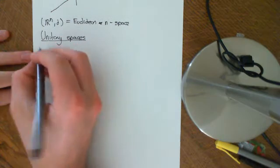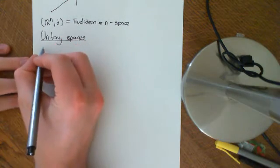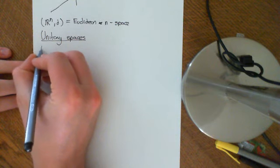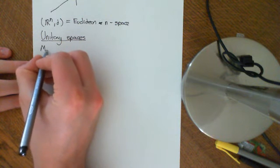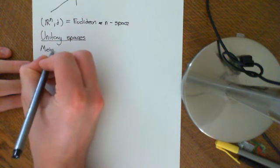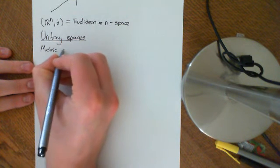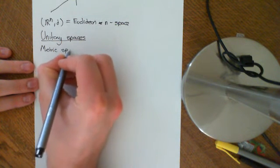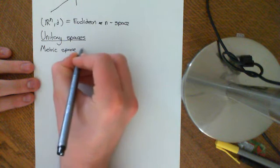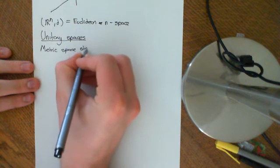Let's look at the metric space structure on the complex numbers — metric space structure on C.